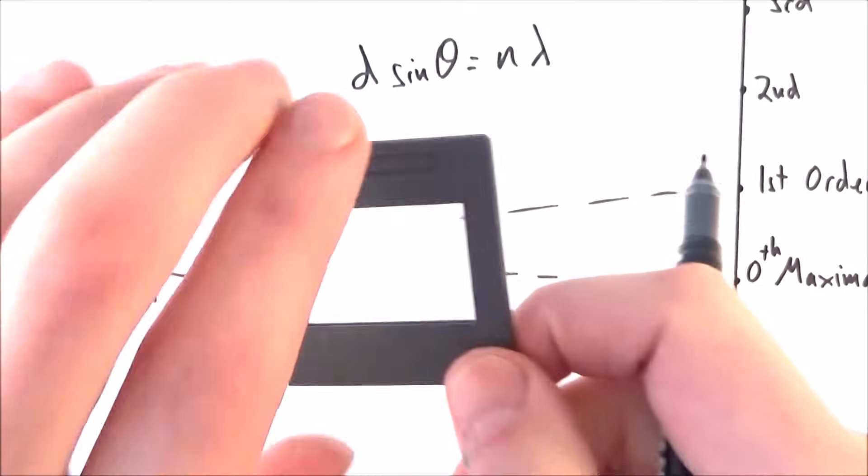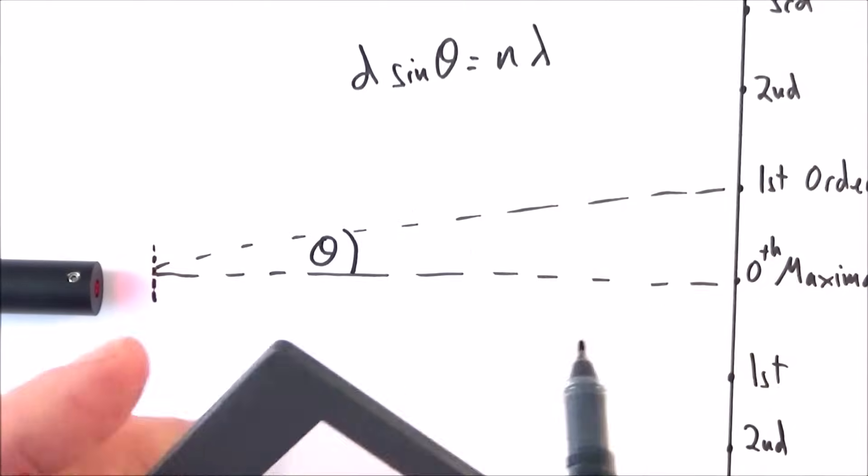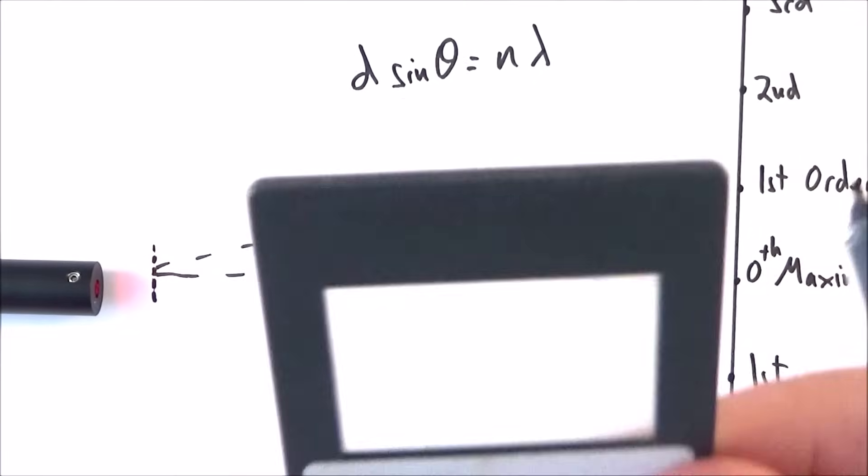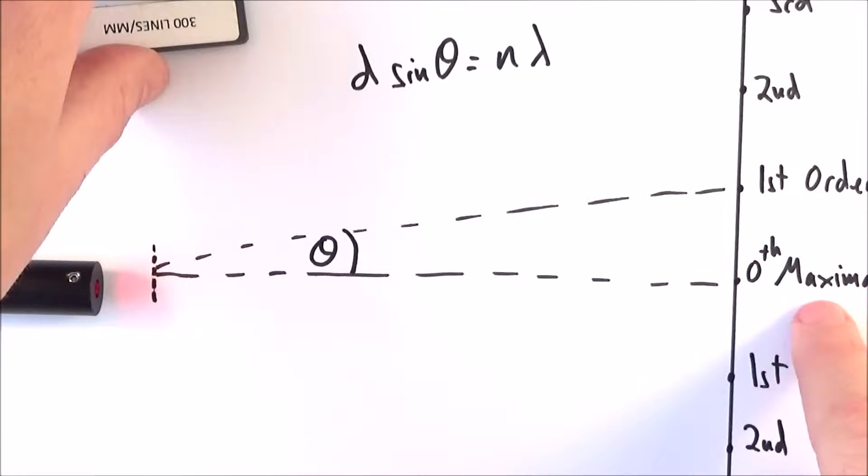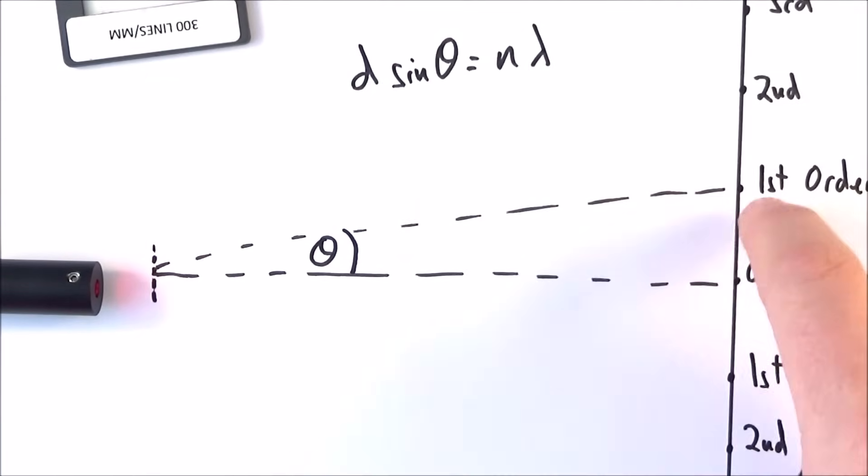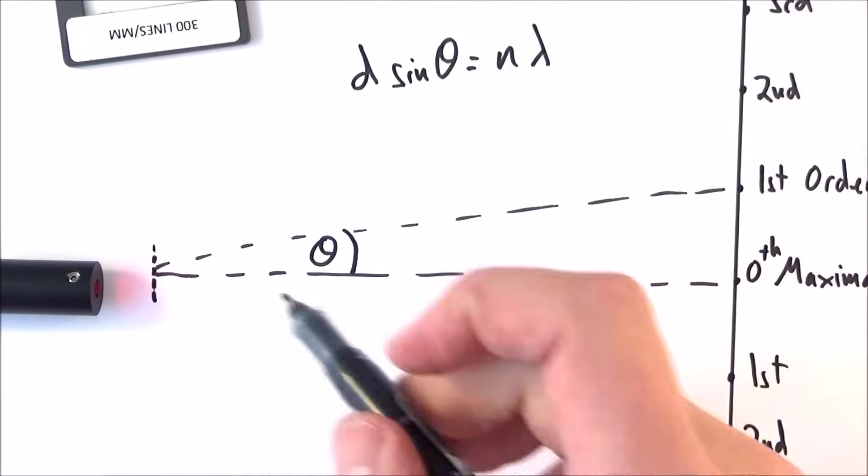The good thing about using a diffraction grating to measure the wavelength of light over the two-slit experiment is that there's so many different gratings here it lets a lot of light through. That means it's very easy to see the bright fringes. We can also look at the separation of the fringes.